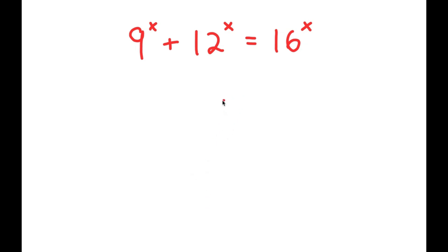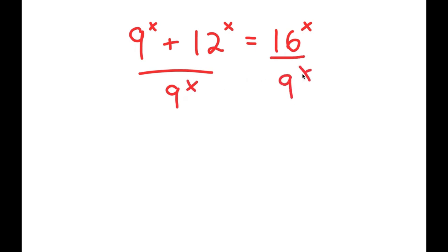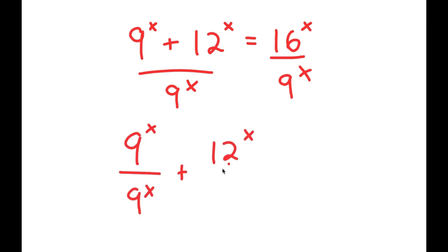In this problem, I have 9 to the power of x plus 12 to the power of x is equal to 16 to the power of x. What I'm going to do is first start by dividing both sides by 9 to the power of x. So this means that I get 9^x over 9^x plus 12^x over 9^x is equal to 16^x over 9^x.